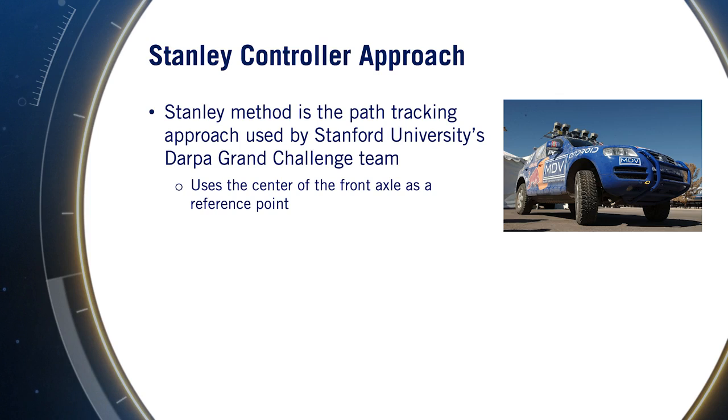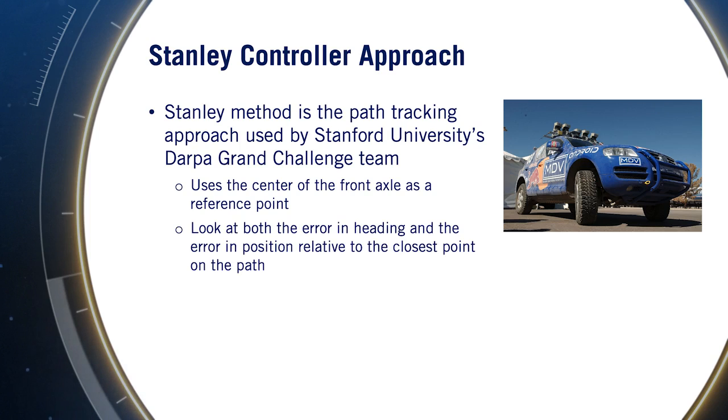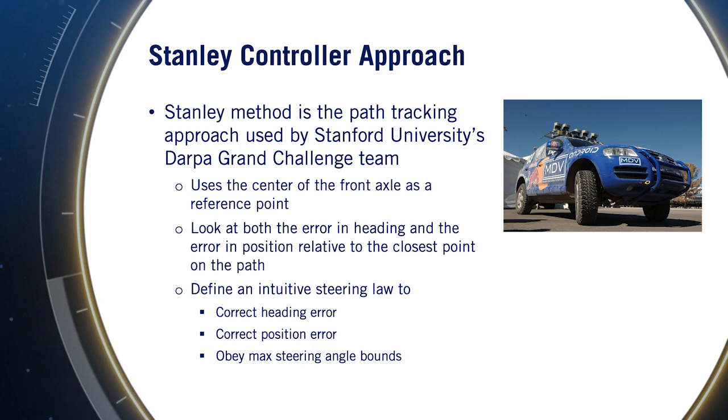Dr. Hoffman was seeking a control law with global convergence to the path and predictable decay of the errors that would be independent of vehicle speed. And so one day in a fit of inspiration, Dr. Hoffman switched the vehicle reference point used for the controller to the center of the front axle instead of either the CG or the rear axle. The next modifications he added were to consider both heading alignment and cross-track error without a look-ahead distance, but directly at the reference point. And finally, the Stanley controller caps its outputs to fall within the limits of the maximum steering angle. In all, these three considerations form the basis for the resulting control law.